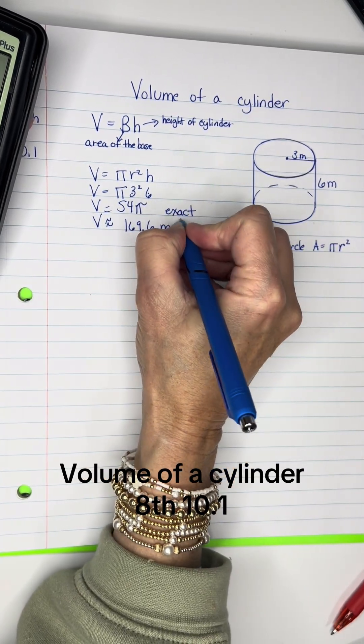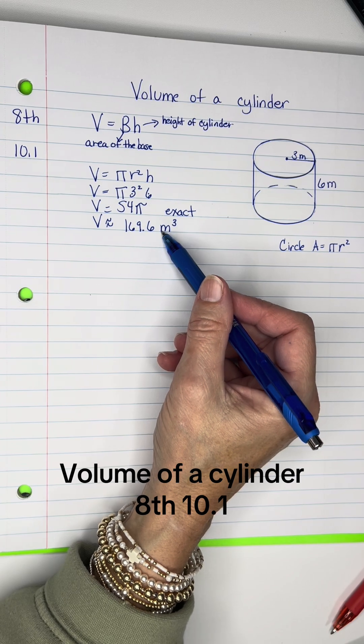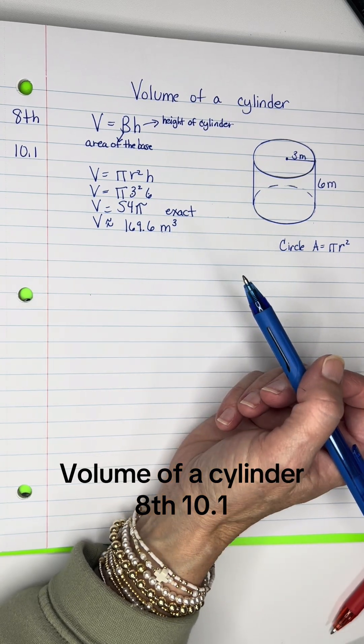So 169.6, these are meters cubed. Volume will always have the meters or foot or whatever it is cubed.